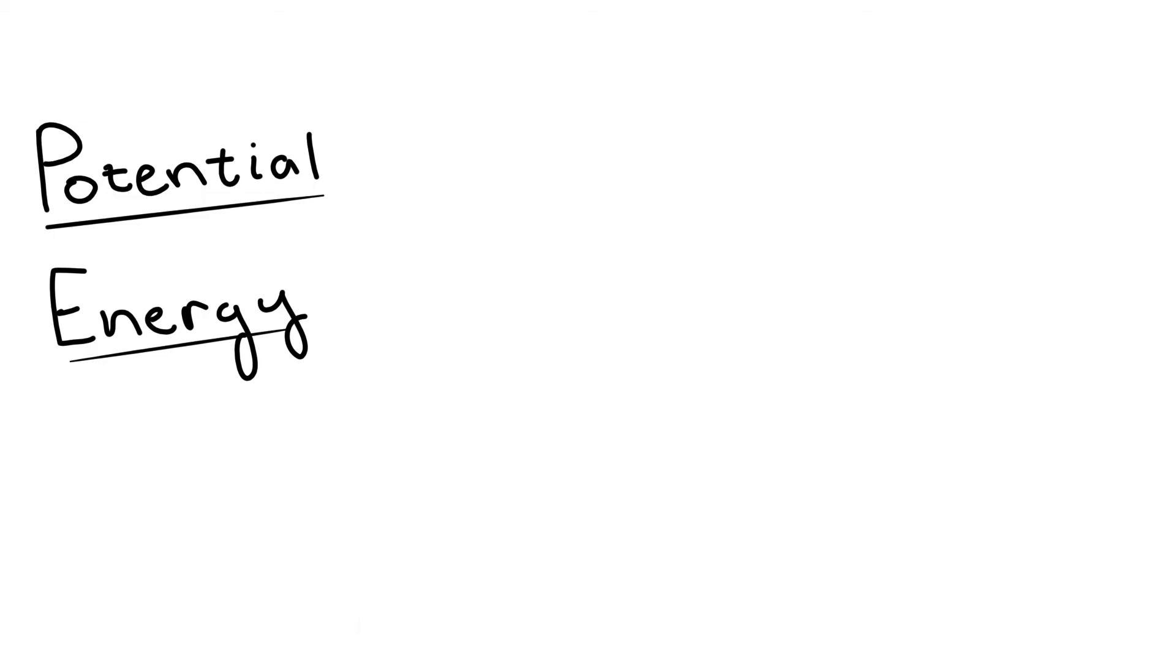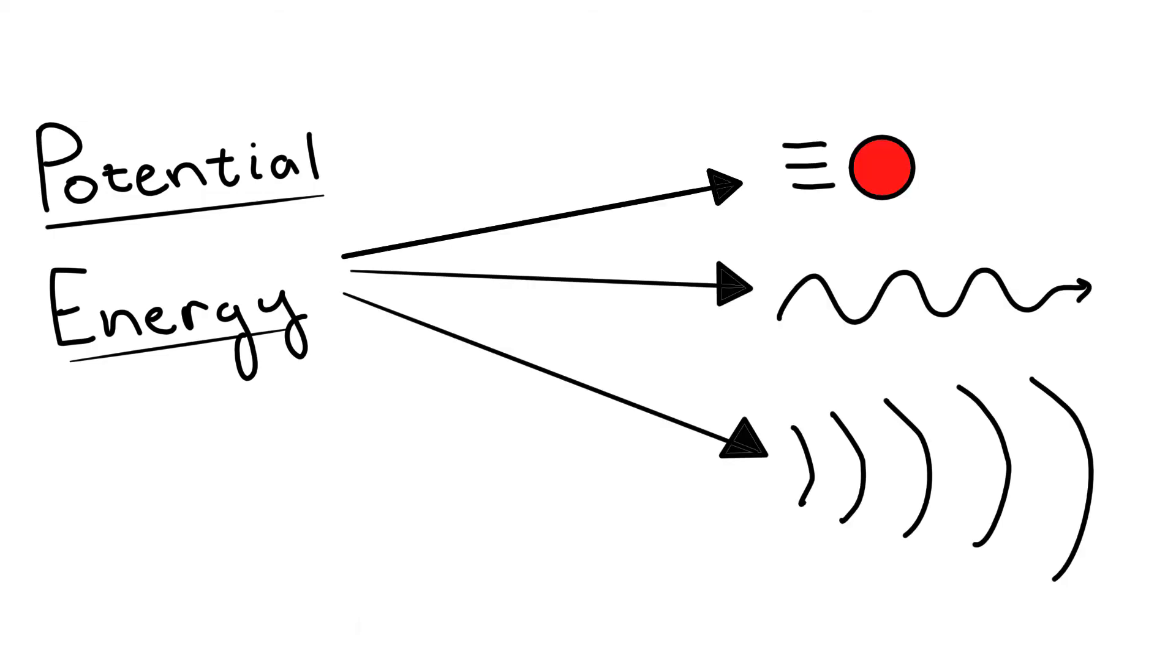As a general rule, potential energy can be thought of as energy that could go somewhere else, given the opportunity. For example, let's think about a ball on top of a hill. When it's just sitting at the top of the hill, it has no energy due to its motion, or kinetic energy. If it were to roll down the hill, it would gain a certain amount of kinetic energy, and this amount of energy that it could have is exactly its potential energy.